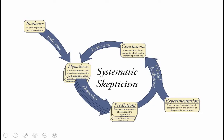Most science courses and textbooks will provide some overview of the scientific method, and it generally looks something like this: initial evidence is used to develop a hypothesis, which provides a tentative explanation of what's occurring. A good scientific hypothesis allows you to generate predictions, which can be tested with experiments designed specifically to test one or more of those predictions. When you conduct those experiments, you look at whether results are consistent with the predictions of a hypothesis. If they are, it reinforces the hypothesis; if not, you would need to discard or alter the hypothesis in some way.